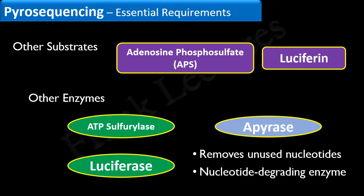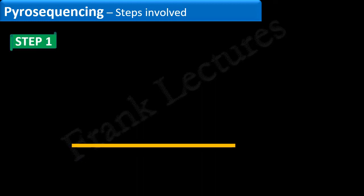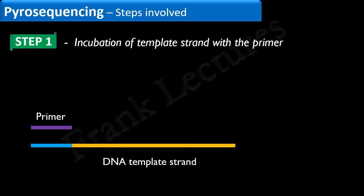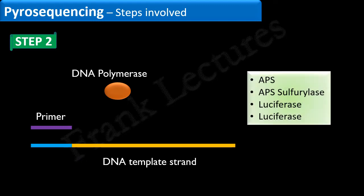In the first step of Pyrosequencing, the DNA fragment of unknown sequence is taken. This DNA sequence is engineered at one end that is complementary to a known primer. This DNA fragment serves as the DNA template strand, and it is incubated with the primer. The primer binds to its complementary sequence on the DNA template strand. In the next step, DNA polymerase is added along with the other enzymes and substrates required for the detection of pyrophosphate.